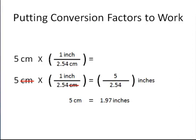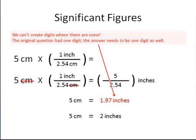That seems simple enough, but there is one small complication. We need to be mindful of significant figures. We can't create digits where there are none. We can't create information where information doesn't exist. The only information we have is the number 5, and we're creating three digits where we only had one before. This is called significant figures. We started with a one-digit number, we have to end with a one-digit number. So we round the answer to the nearest whole number, and the final answer is that 5 centimeters equals 2 inches.